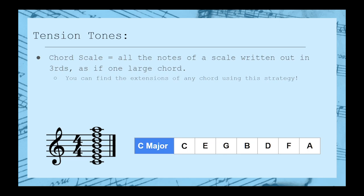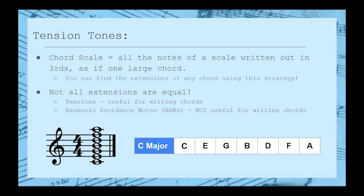You see, not all extensions are actually useful for harmony. The useful ones are called tensions and can be added to your chord. But the not-so-useful ones are called harmonic avoidance notes, or HANs for short.